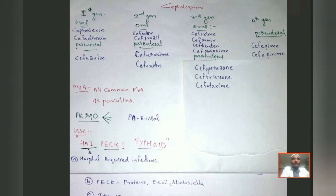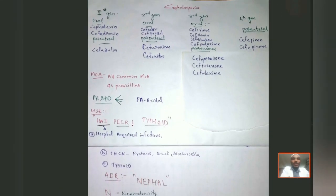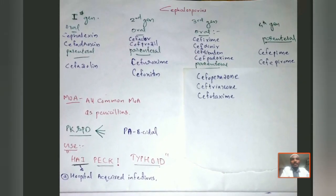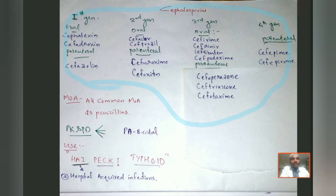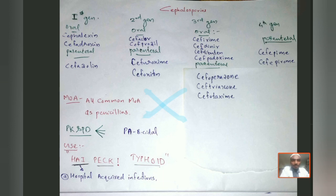Classification of cephalosporins has been covered. Now moving on to mechanism of action. Beta-lactam antibiotics share a common mechanism of action with penicillin — the inhibition of the enzyme transpeptidase. Their pharmacological action is bactericidal because they inhibit cell wall synthesis.